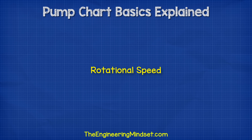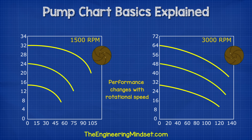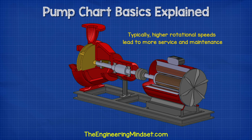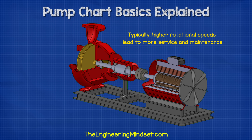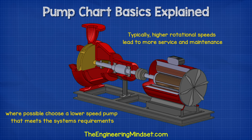Rotational speed. Some pump manufacturers will provide separate charts for operating the pump at different rotational speeds. We can then compare the performance to get a close match and then find an electrical motor which will suit our needs. Typically speaking, higher rotational speeds lead to more service and maintenance, so where possible, it's good practice to choose a lower speed pump that meets our system requirements.